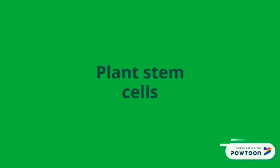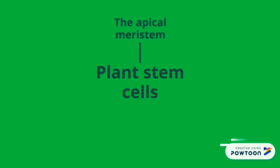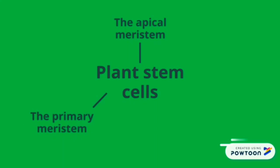Plant stem cells are usually divided into three groups. The apical meristem, which are completely undifferentiated cells that allow the rise of organs or creation of roots. Second, the primary meristem is the next step after the apical. The third one is the lateral meristem, which causes the lateral growth of the stem.